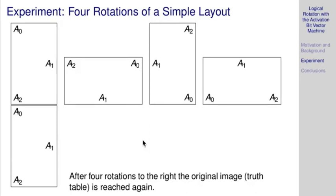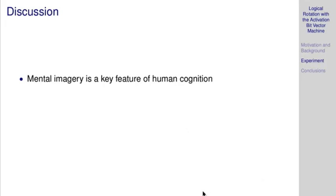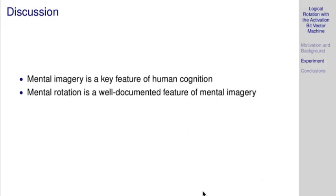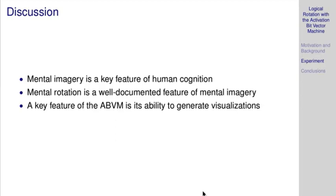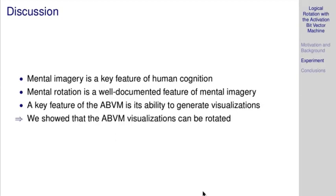If we implement that, we could, for instance with a simple layout, have this whole portion end up here as the two bits exchange roles. Then here, east becomes south, so you can see how the bits are negated. We can test how this works by performing four rotations of a simple layout—should get us again to the same condition. Here you can see we have zero, one, two in this arrow shape. The arrow points down, to the left, up, and it's back into its original state. Mental imagery is a key feature of human cognition. Mental rotations are a well-documented feature, and we showed that those visualizations can be rotated.